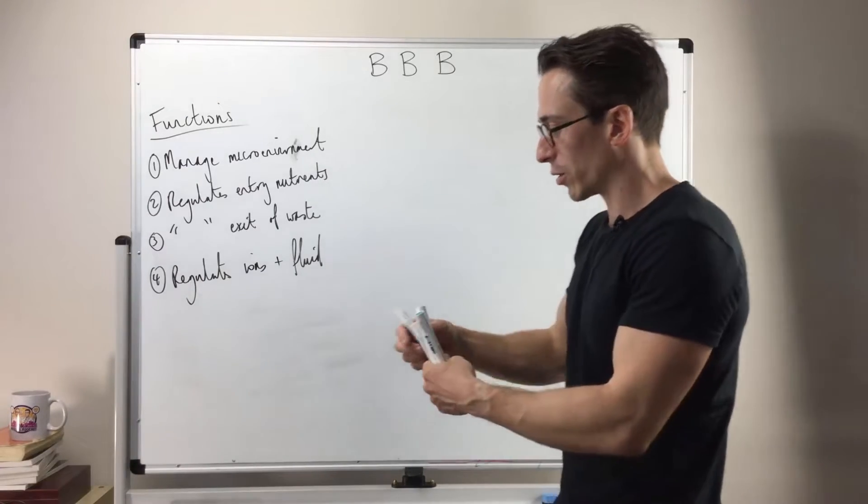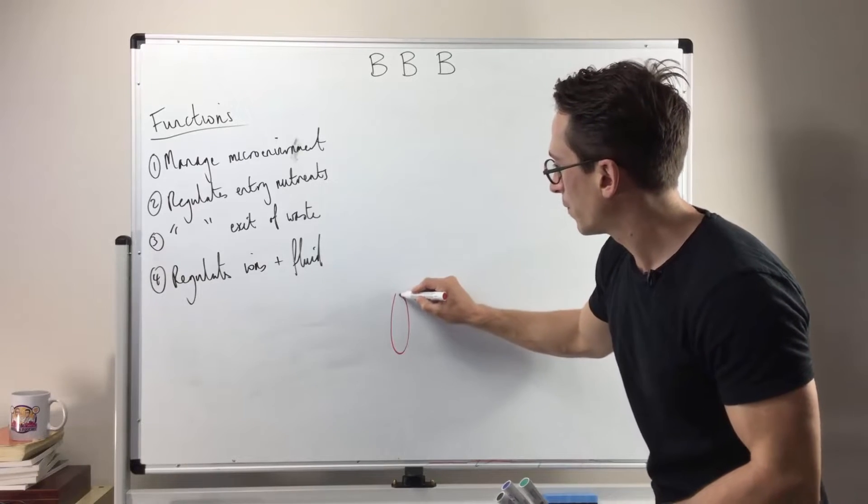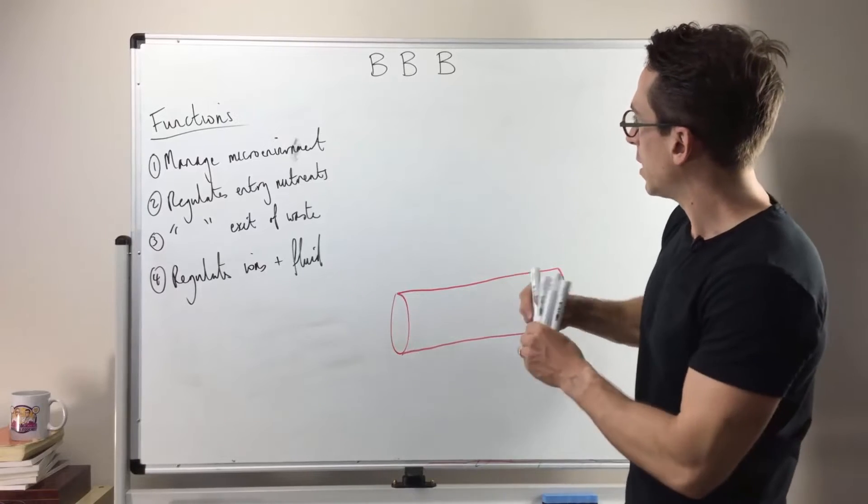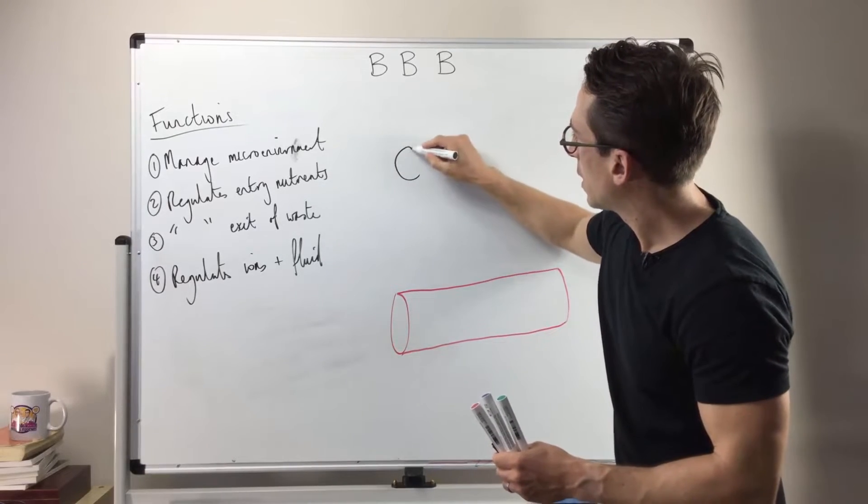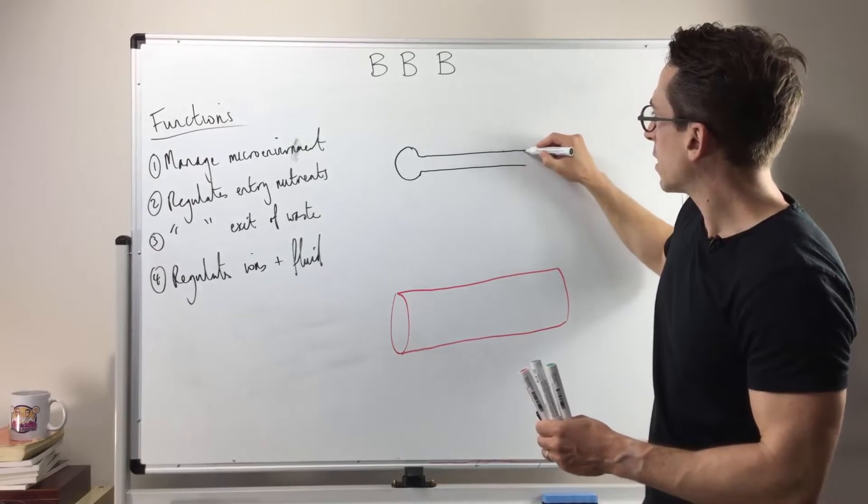Now there's three structures you need to know that comprise the blood-brain barrier with some accessory structures involved. Let's take a look. All right, so first of all if I want to draw up a blood vessel like that and then I'm going to draw up a neuron up here and this neuron wants some substances that's floating through the bloodstream.